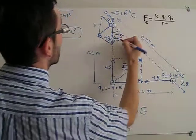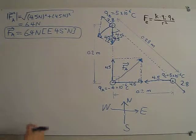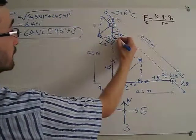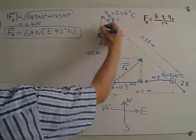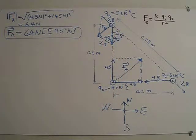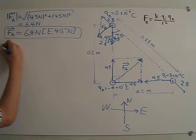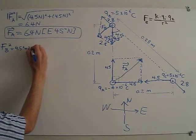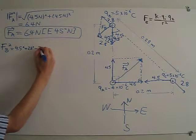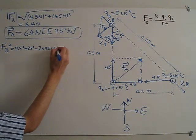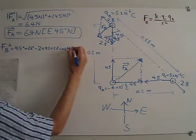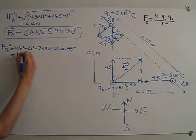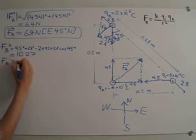This side is 4.5 and this angle is 45 degrees. Using the cosine law on this triangle with sides 2.8 and 4.5, the cosine law says that FB squared is equal to 4.5 squared plus 2.8 squared minus 2 times 4.5 times 2.8 times cosine 45 degrees. This gives us 10.27, and if we take the square root, it is 3.2 Newtons.